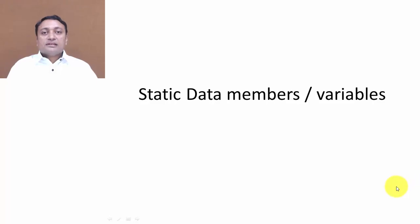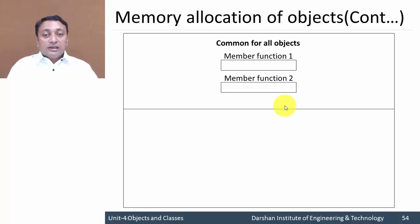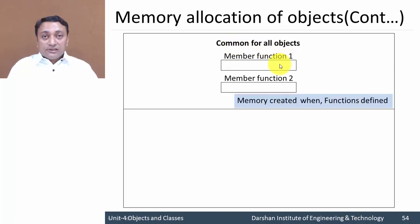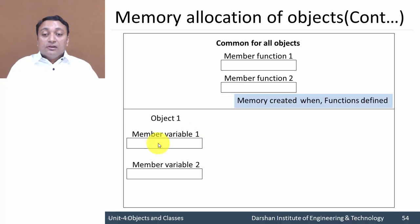In this lecture we are going to discuss static data members or variables. But before that, let us discuss how memory is allocated to data members and member functions. Whenever you create any object, there are two functions and they will be common for all objects. For member functions, memory is created when you define that function in your class specification.